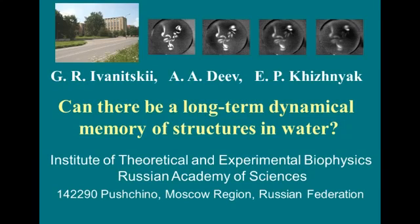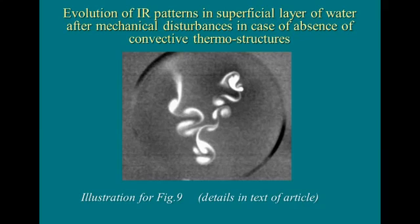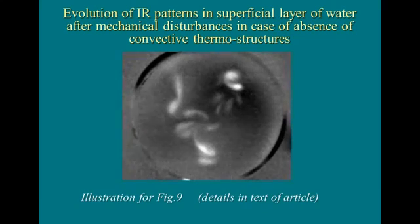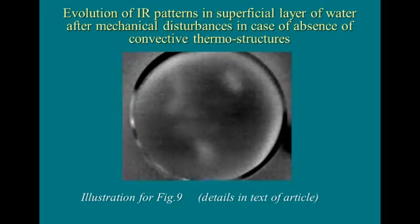Mobility of water, associated with relatively low value of its viscosity and non-equilibrium state, leads to continuous convection mixing in thin and thick layers. This film fragment demonstrates evolution of temperature distribution in a thin superficial layer of water in a 10 cm Petri dish. The thickness of water is about 2 mm.